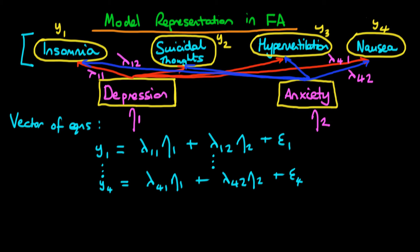In this video I want to continue to talk about model representation in factor analysis. In the last video we were talking about the vector of equations interpretation of models in factor analysis, and we said that it was essentially equivalent to having in this case one regression equation for each of the observed characteristics.